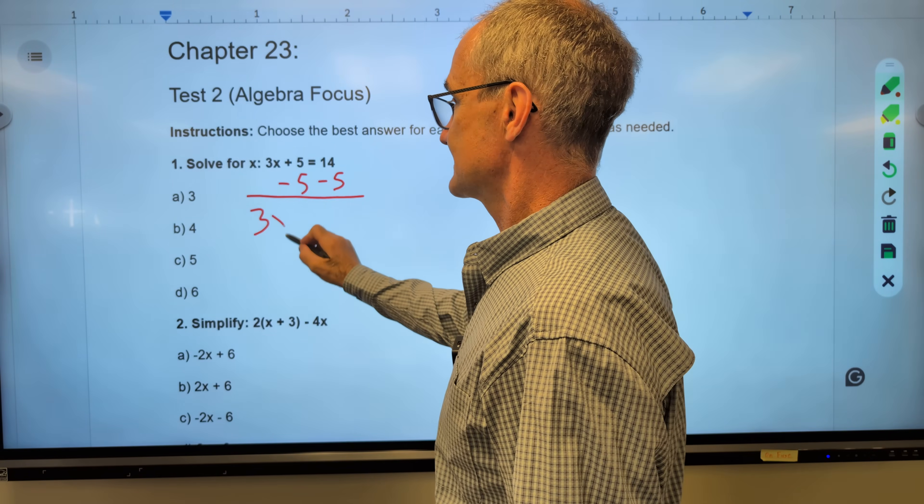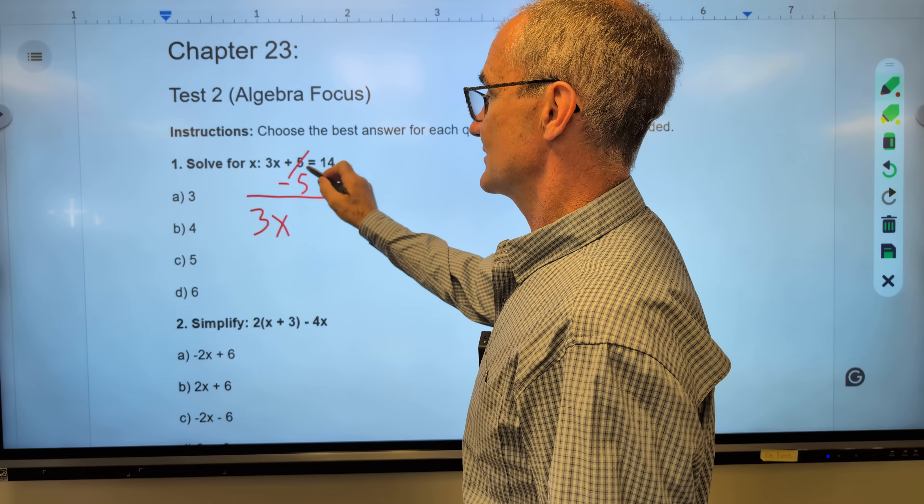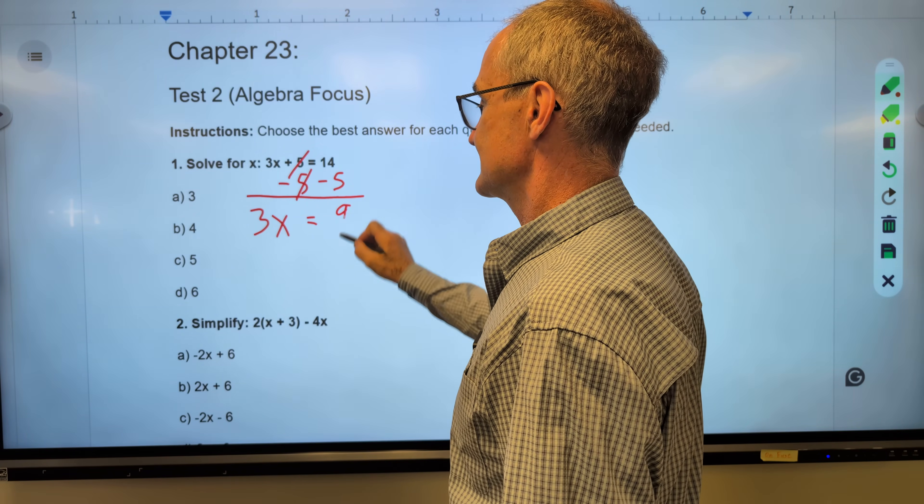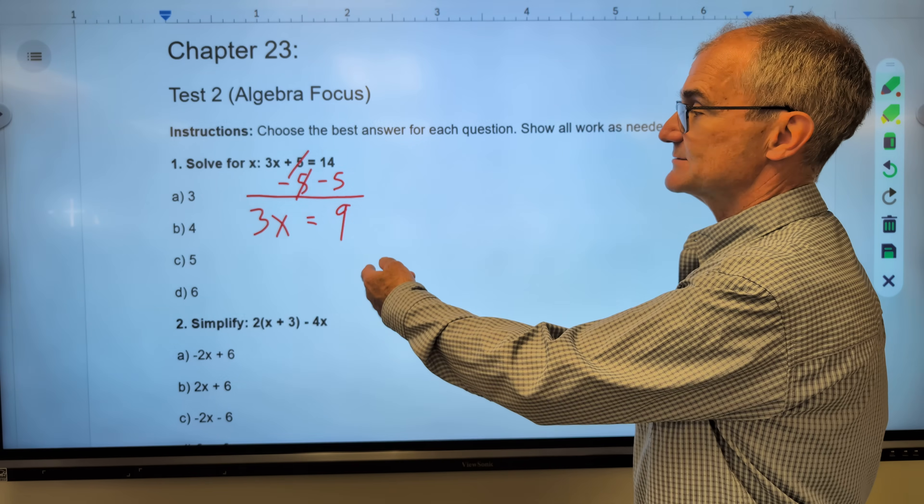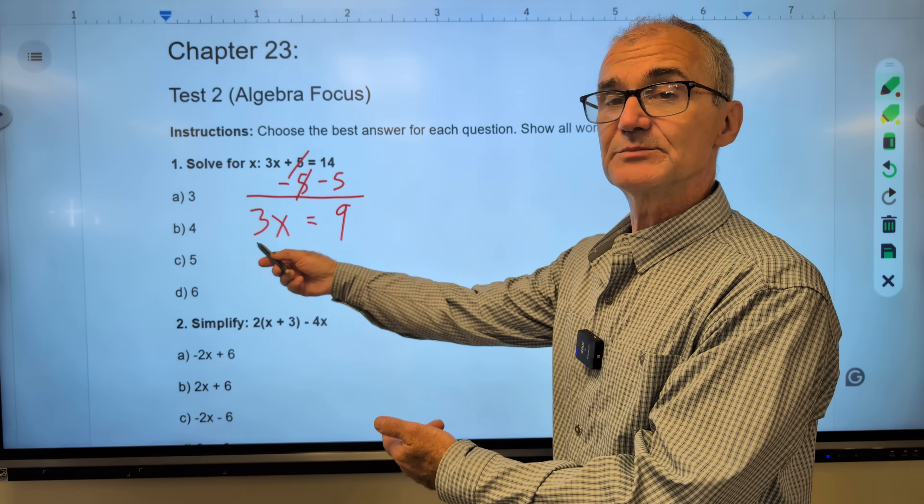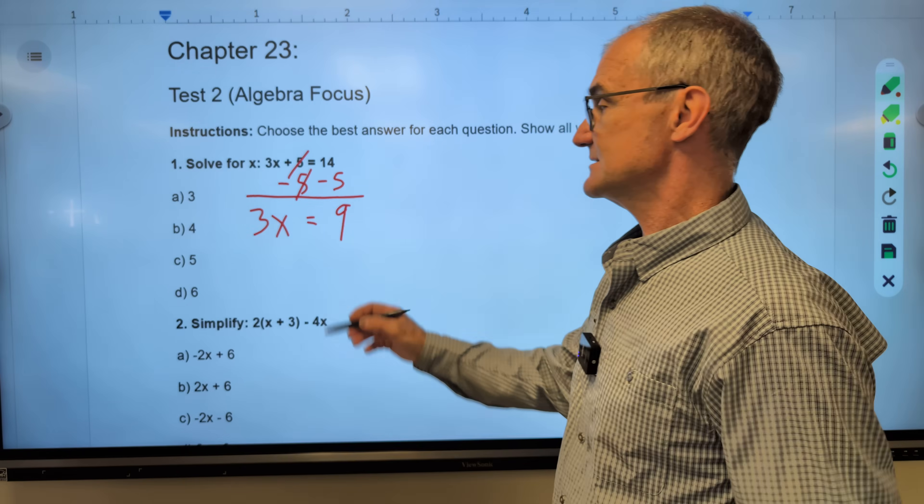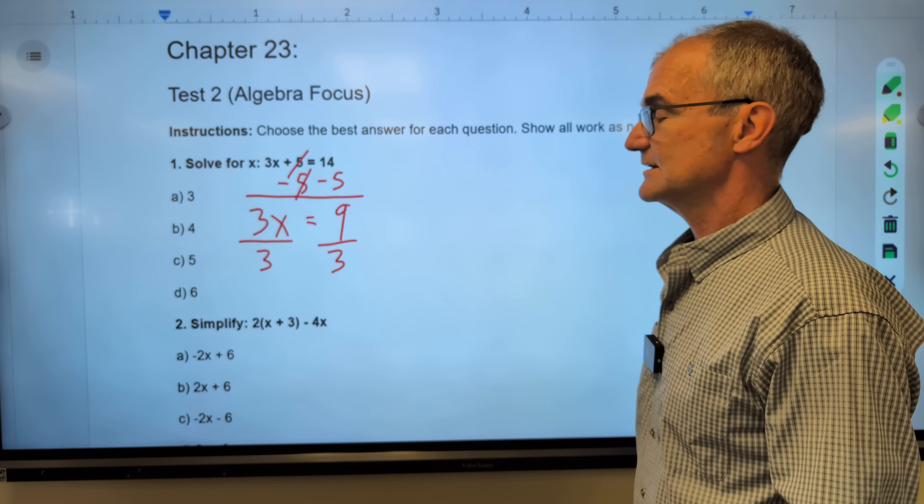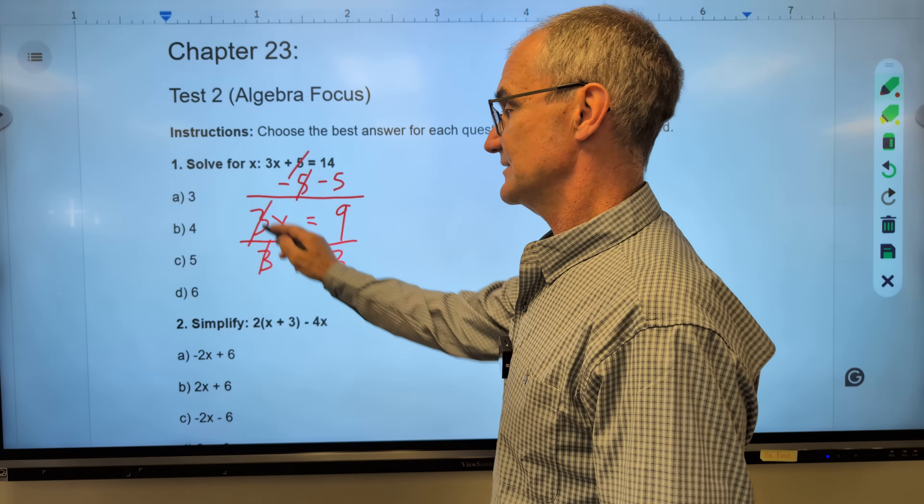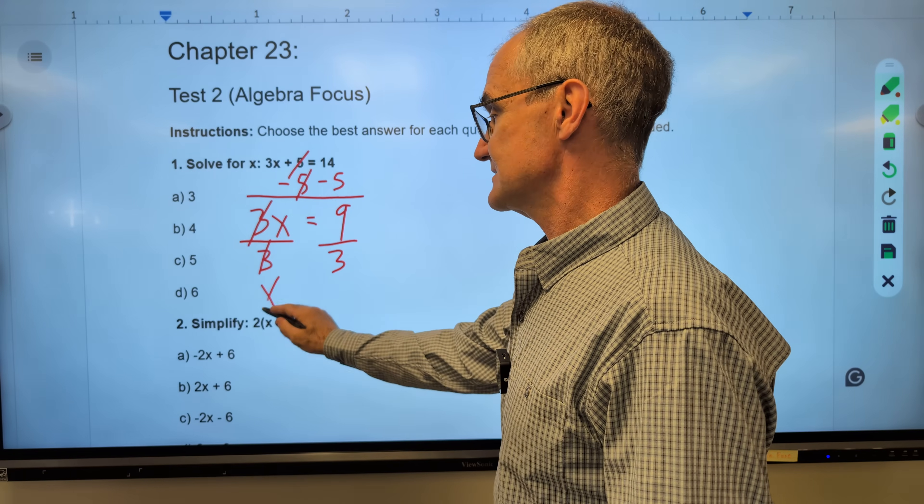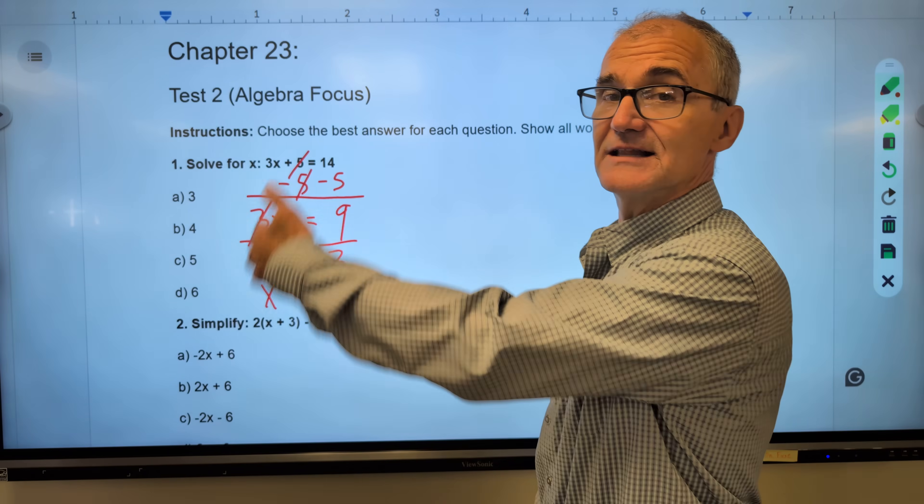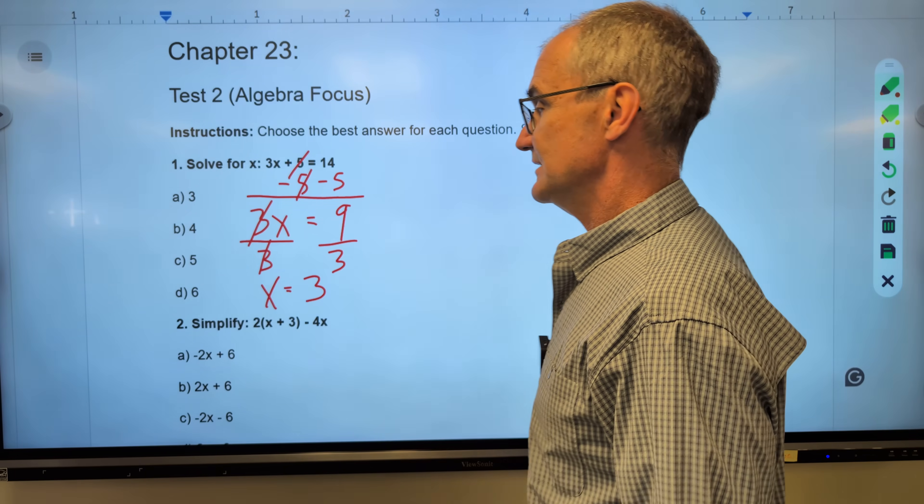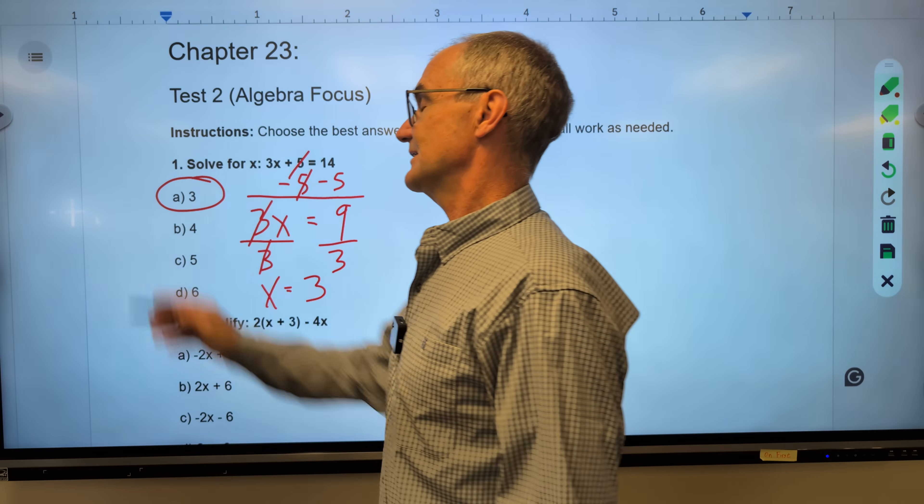I still have that 3x. 5 minus 5, those cancel. That equal sign comes straight down. 14 minus 5 is 9. We're going to get that x by itself. It is being multiplied. The reverse operation of multiplication is division. I'm going to divide both sides of the equation by 3. 3 divided by 3 is 1. That gives me x by itself. 9 divided by 3 is 3. Correct answer, 3 right here.